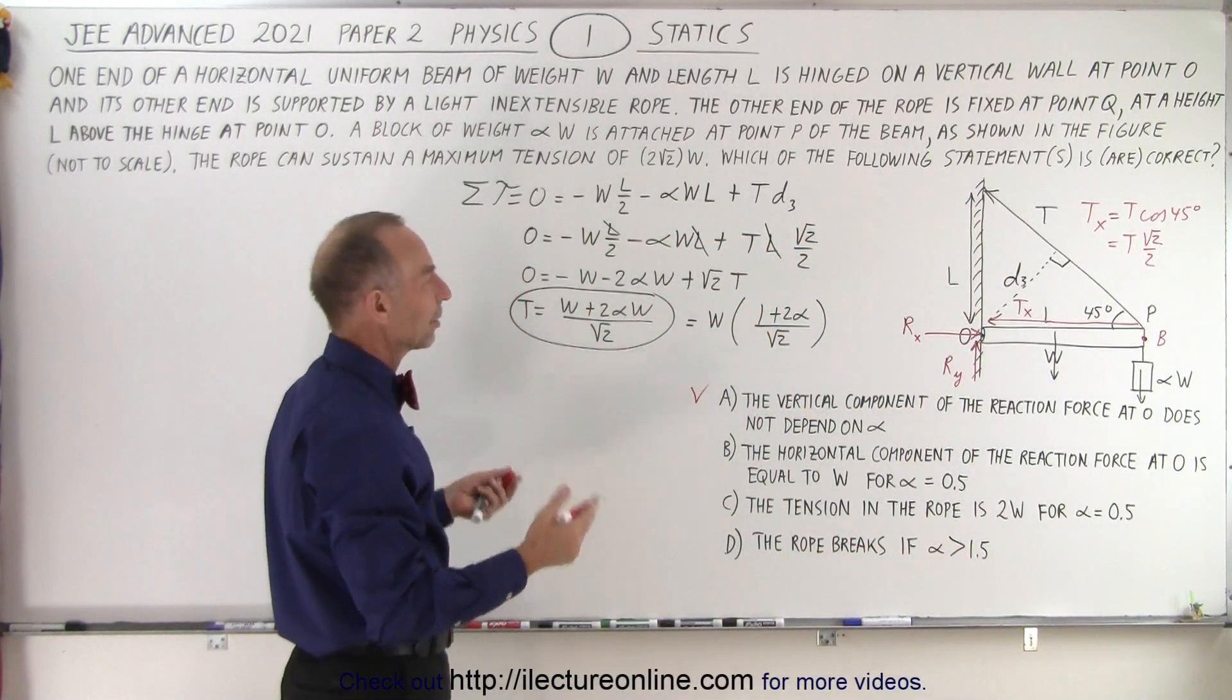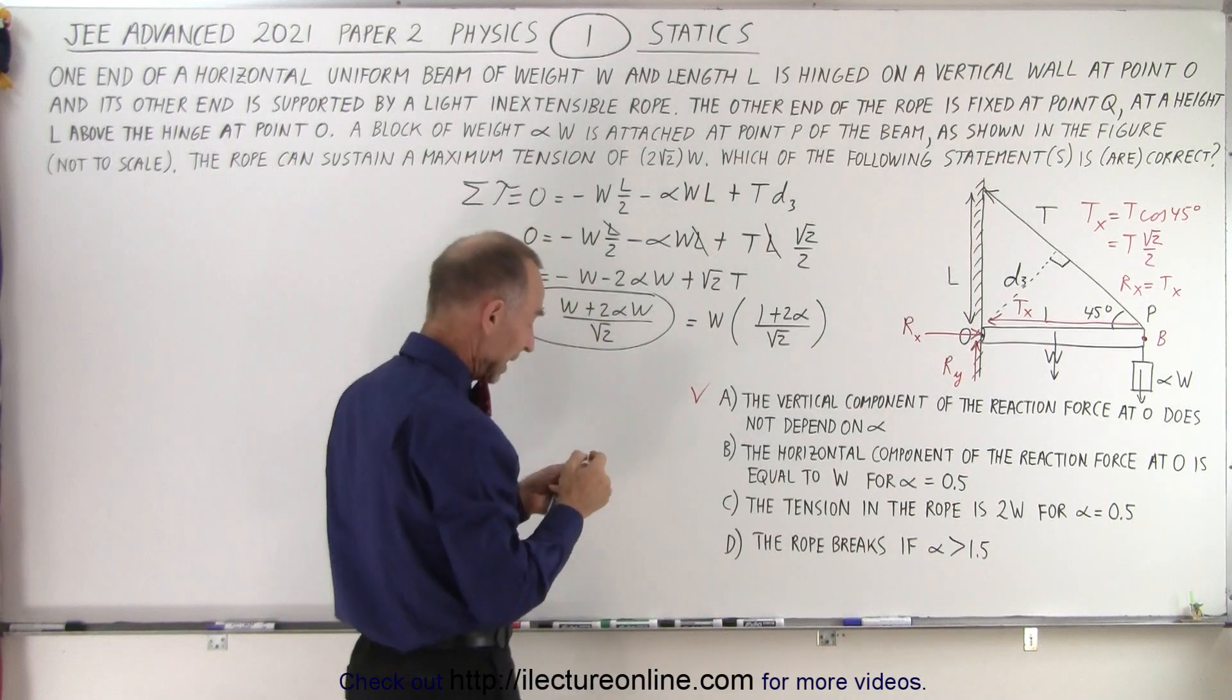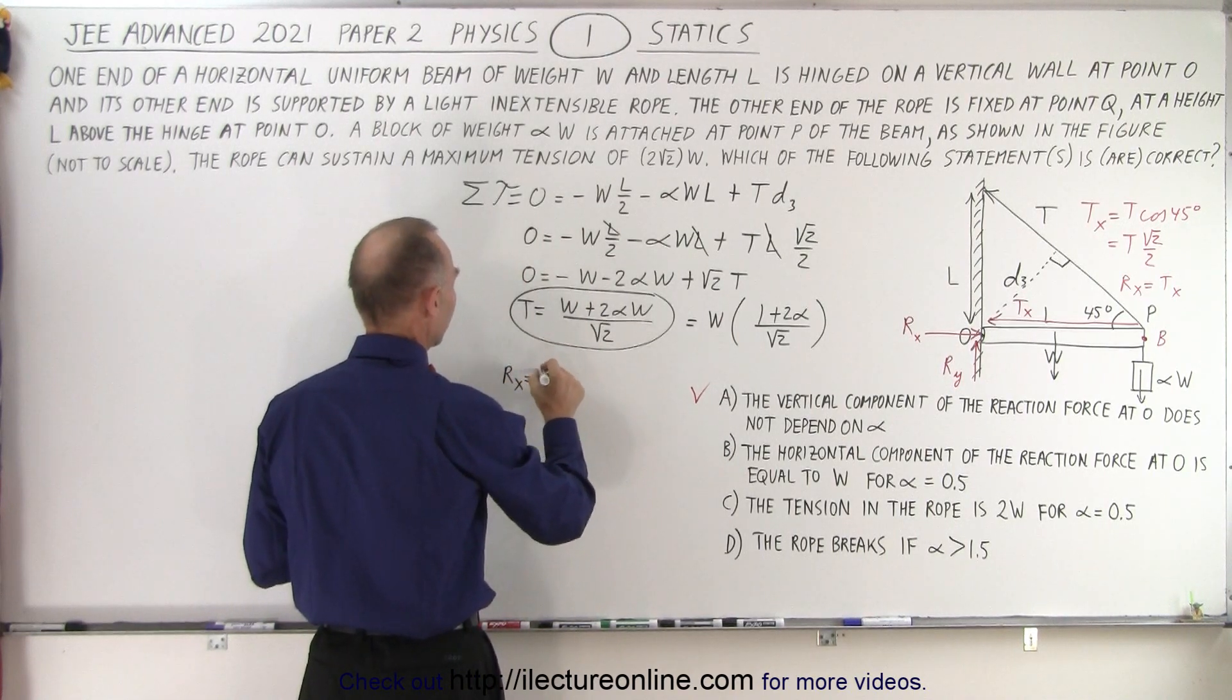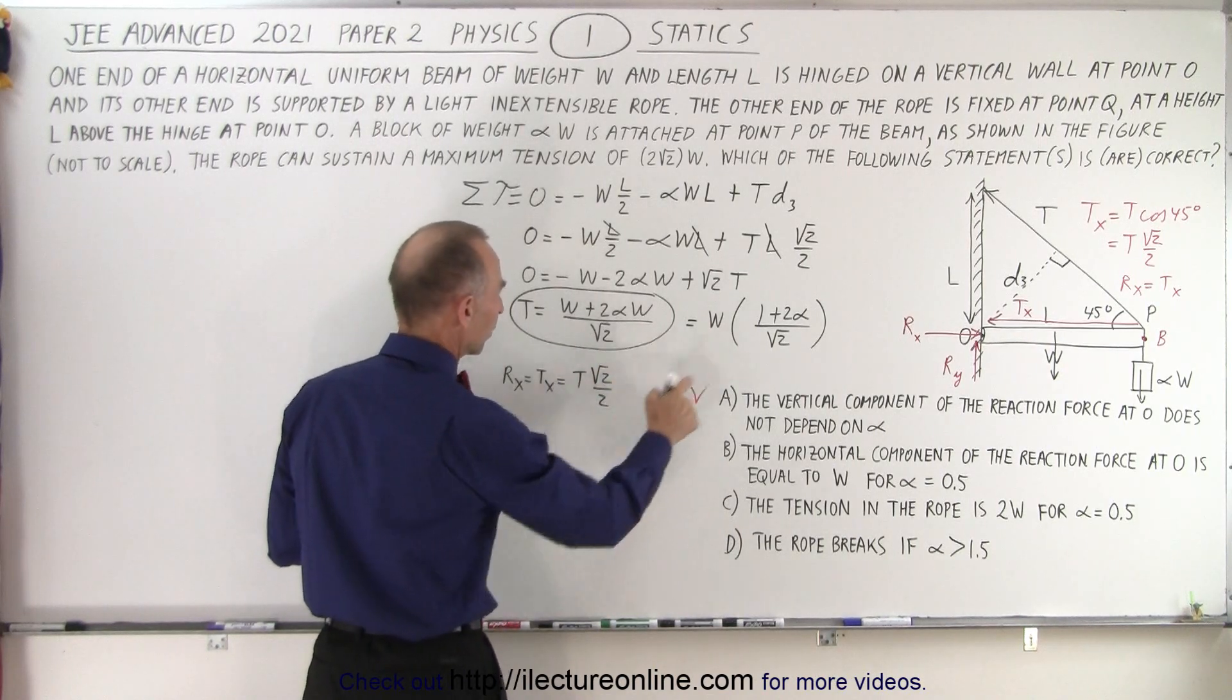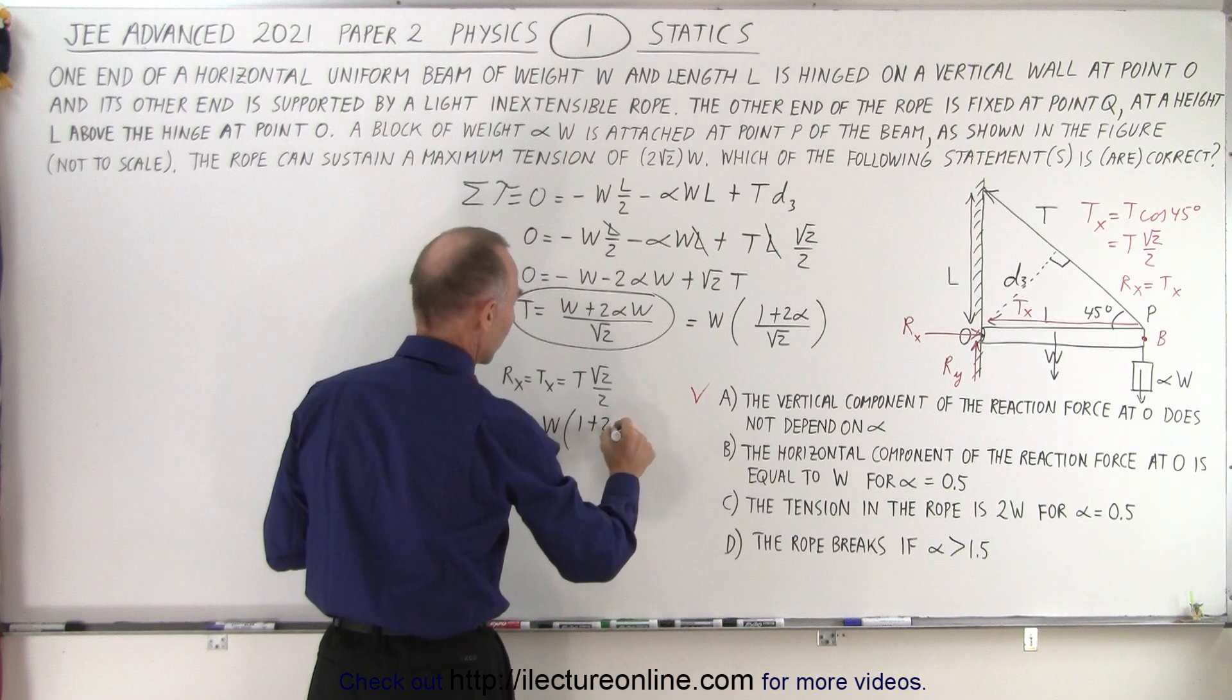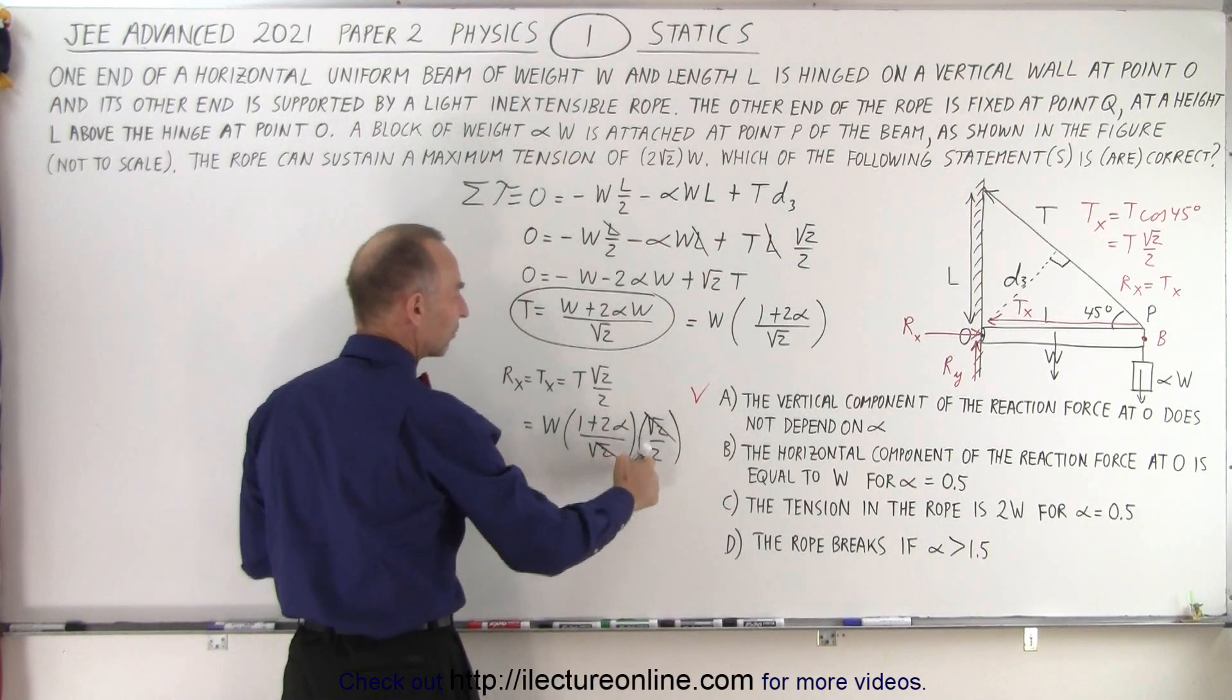So we can then say that R sub X must equal T sub X. Now let's see what that would be equal to if we set alpha equal to 0.5. R sub X, which is equal to T sub X, which is equal to T times the square root of 2 over 2. If I multiply this times the square root of 2 over 2, I get W times 1 plus 2 alpha divided by the square root of 2 multiplied times the square root of 2 over 2. The square root of 2 is canceled out, and now we have 1 plus 2 alpha over 2.